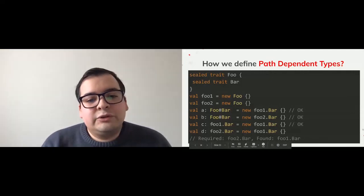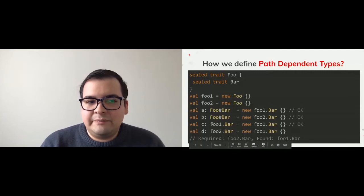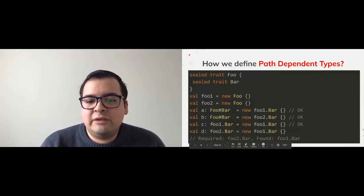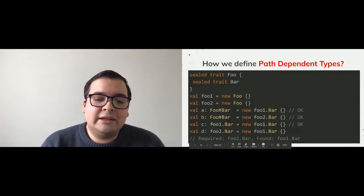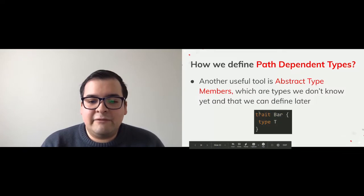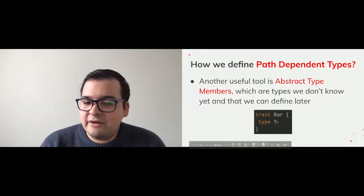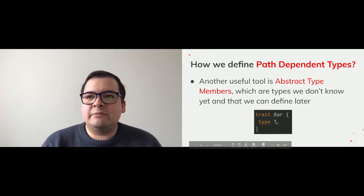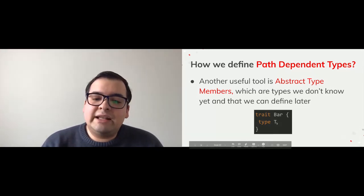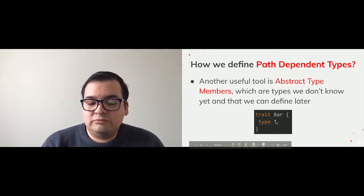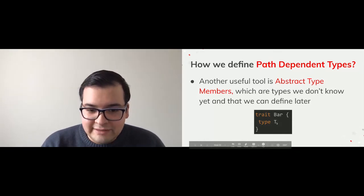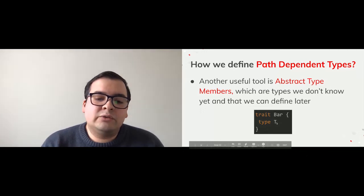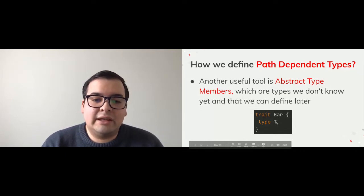Another useful tool in Scala is abstract type members. These are types that we don't know yet and can define later. For example, I have a trait Bar with a type T declared inside it, but this type is not yet defined. Scala allows us to do this — the idea is that we can define later what this abstract type member inside Bar will be.